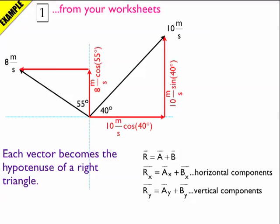One more side to do. That's going to be opposite the 55 degrees, so that's 8 meters per second times sine 55 — the hypotenuse times sine 55. Notice that I have units on all of these components.